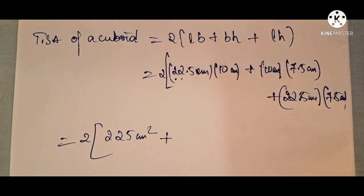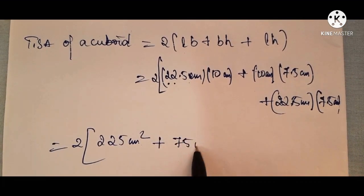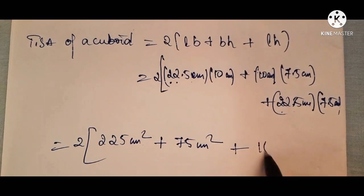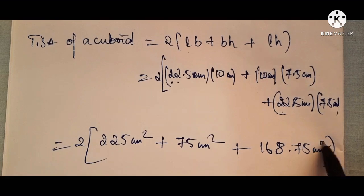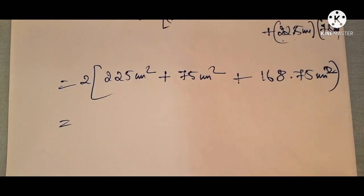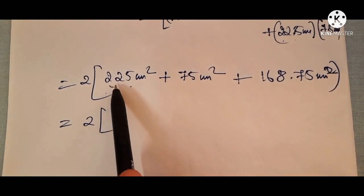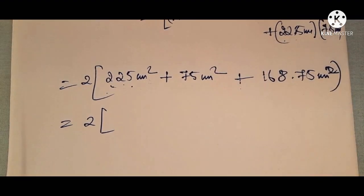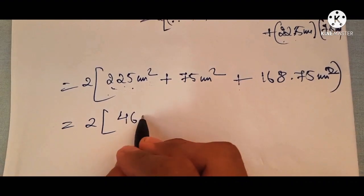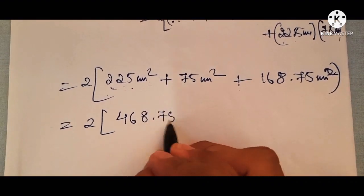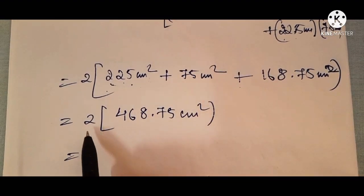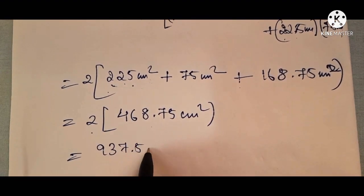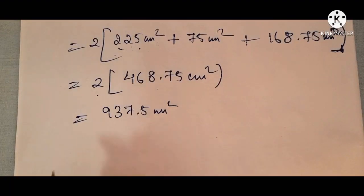Now computing: 22.5 into 10 gives 225 centimeter square, 10 into 7.5 gives 75 centimeter square, and 22.5 into 7.5 gives 168.75 centimeter square. Adding these: 225 + 75 + 168.75 = 468.75 centimeter square. Multiplying by 2 gives 937.5 centimeter square.